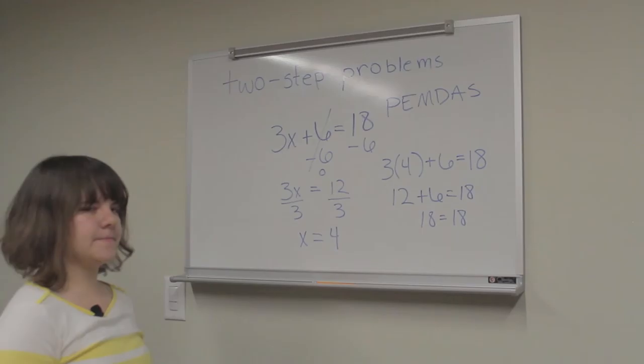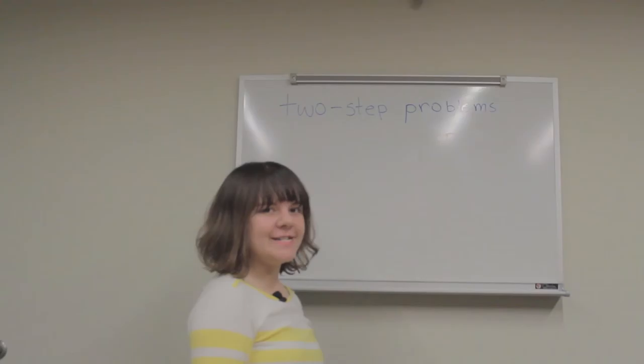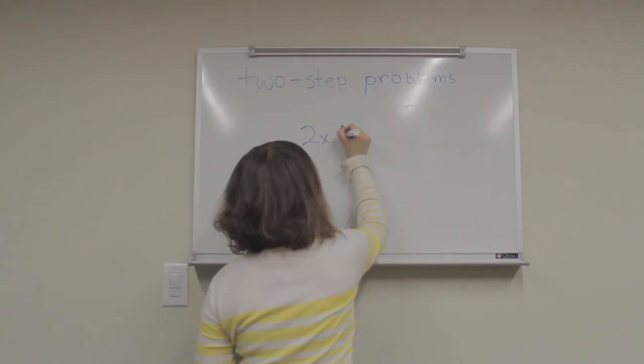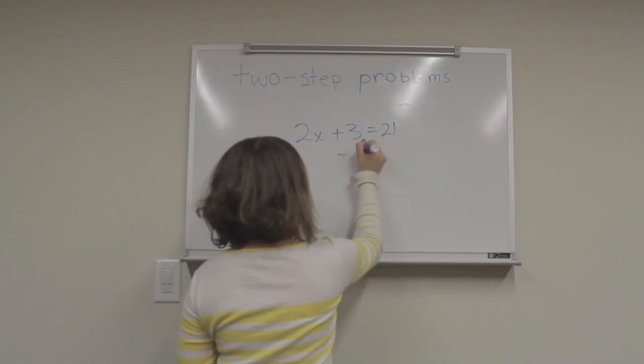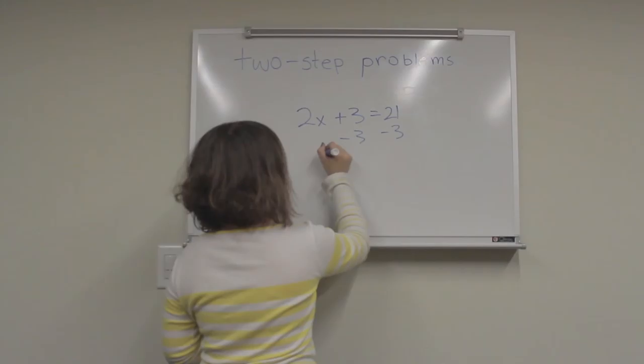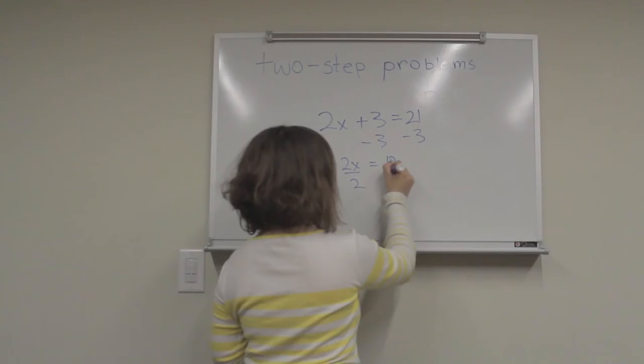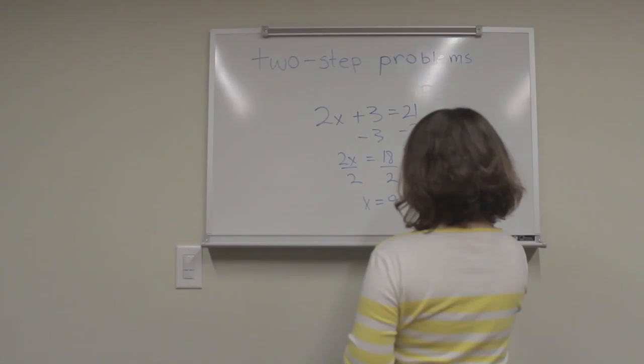Let's go ahead and try another one. We're going to do another problem really quick. So our next problem is 2x plus 3 equals 21. Again, subtract 3 from itself. Subtract 3 from the other side. So 2x is equal to 18. Divide by 2 on both sides. And x is equal to 9.